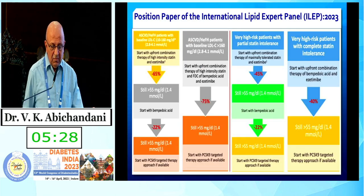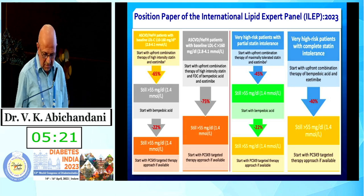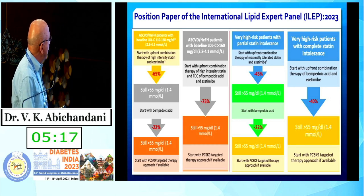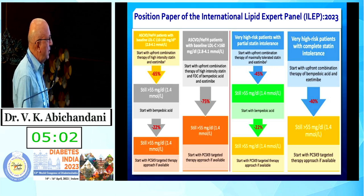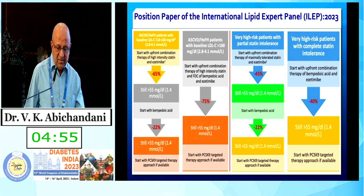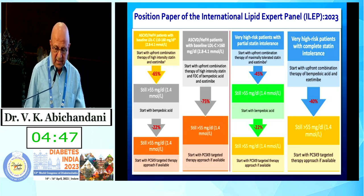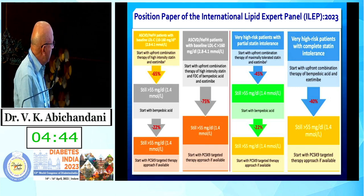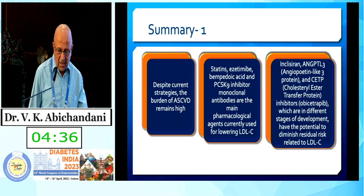The International Lipid Expert Panel position paper published just a few weeks ago now places Bempedoic Acid ahead of PCSK9 inhibitors — not only because of cost, but also because of appreciable efficacy. For ASCVD or heterozygous familial hypercholesterolemia patients with LDL-C of 110–160 mg/dL, those above 160 mg/dL, those partially intolerant to statins, or those completely intolerant, Bempedoic Acid drives LDL-C to the target of less than 55 mg/dL across all four categories.